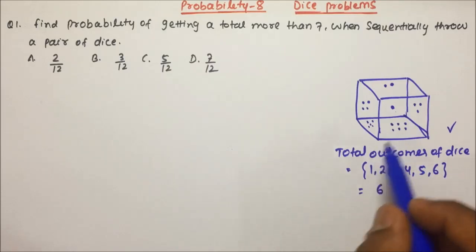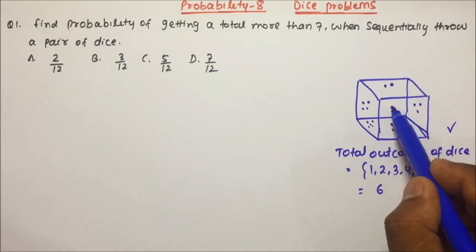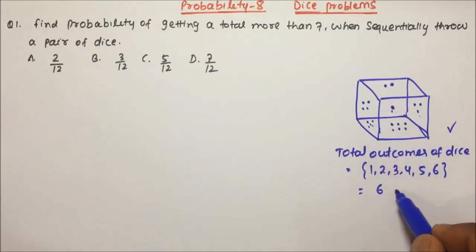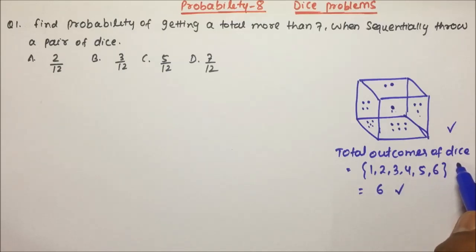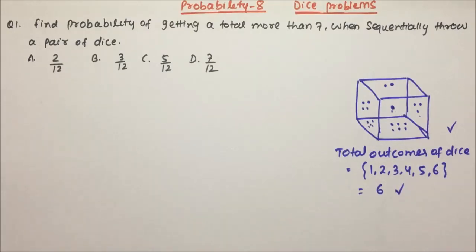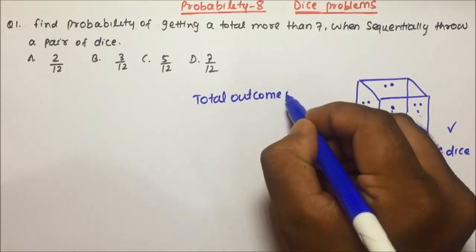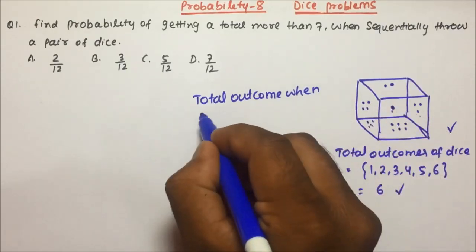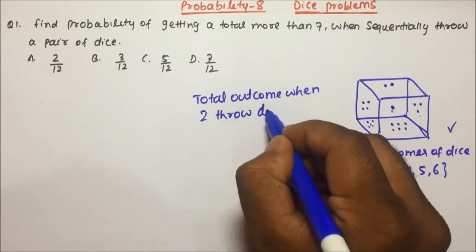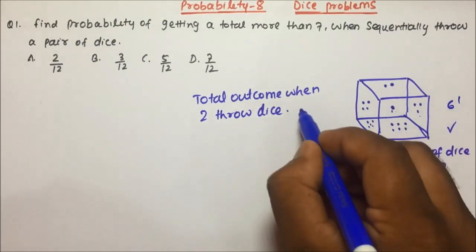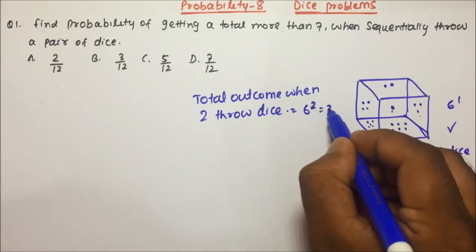You can see total outcomes means: if we throw a dice, 1 may come, 2 may come, 3 may come, 4 may come, 5 may come, or 6 may come. So total outcomes of a dice when you throw only one dice is 6. Now, what will be the total outcomes when we throw 2 dice? When you throw 1 dice it is 6 to the power 1, so when we throw 2 dice it will be 6 squared, which is 36.